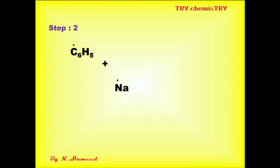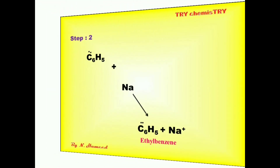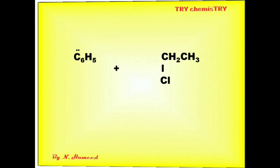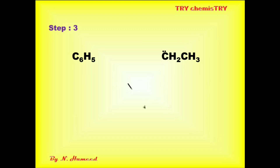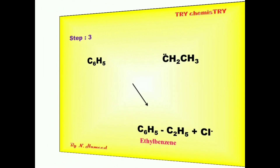Another sodium atom donates an electron to the free radical phenyl group. The phenyl group now contains a pair of electrons, and Na becomes Na plus. This pair of electrons is donated toward another molecule of chloroethane — it attacks the alpha carbon. That carbon cleaves the chlorine, and both the ethyl group and phenyl group combine to give ethylbenzene.